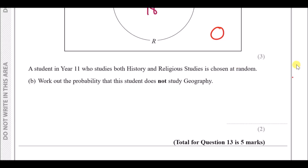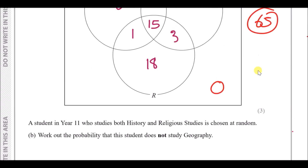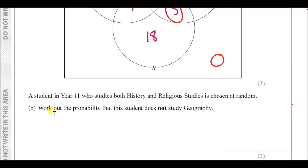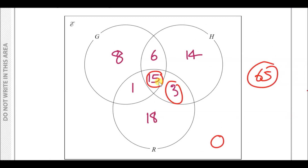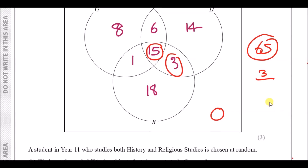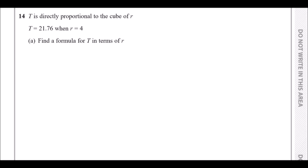A student in Year 11 studies both history and religious studies. We can see that 3 study both history and RS only, and 15 study both but also geography. We need the probability that this student does not study geography. The people who do not study geography here are the 3, out of a total of 18 who study both H and R. So the probability is 3/18.